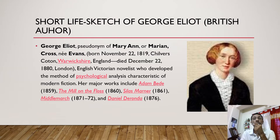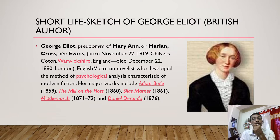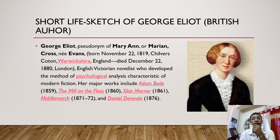Before we go further, let us have a look at the short life sketch of George Eliot. She is a British writer — some people would like to call her Mary Anne Evans — born 22 November 1819, died December 22. She is an English Victorian novelist who developed the method of psychological analysis characteristic of modern fiction. Her major works are Adam Bede, The Mill on the Floss, Silas Marner, Middlemarch, and Daniel Deronda.